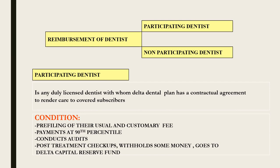Enrollment in the Delta Dental Plan involves two types of dentists: participating and non-participating. A participating dentist is a licensed dentist with whom the Delta Dental Plan has a contractual agreement to render care to covered subscribers. The participating dentist must pre-file the usual customary fee; payments are made at the 90th percentile, audits and post-treatment checkups are conducted, and some money is withheld to the Delta Capital Reserve Fund. Non-participating dentists receive reimbursement based on a lower percentage of charges.